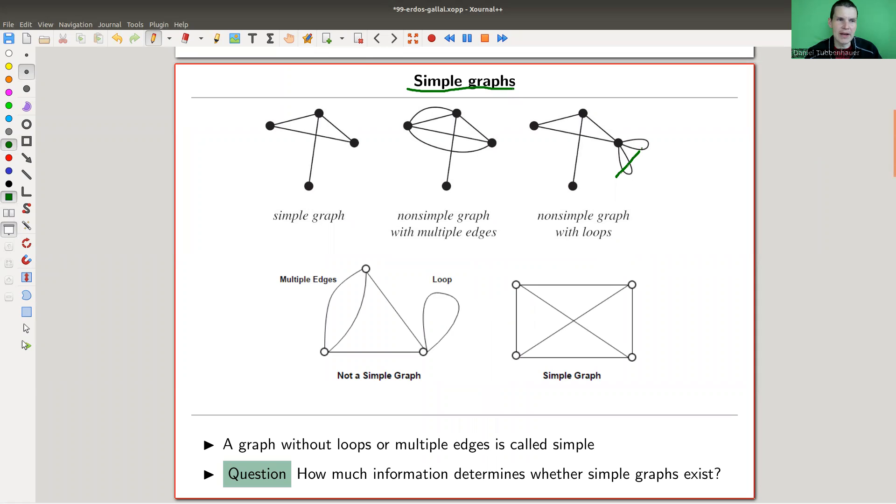So this really means I don't want any loops like in this case here. So simple graphs don't have any loops, no loops. And I also don't want any multiple edges. And we will see that this is actually very important. So here two edges between those two vertices, I don't like that. So here, for example, again, two edges between those two vertices. I don't like that. It's not part of the definition of a simple graph.